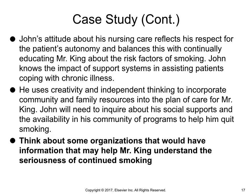John's attitude about his nursing care reflects his respect for the patient's autonomy, and balances this with continually educating Mr. King about the risk factors of smoking. John knows the impact of support systems in assisting patients coping with chronic illness. He uses creativity and independent thinking to incorporate community and family resources into the plan of care for Mr. King. John will need to inquire about his social supports and the availability in his community of programs to help him quit smoking. Think about some organizations that would have information that may help Mr. King understand the seriousness of continued smoking.